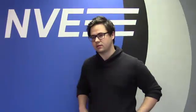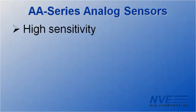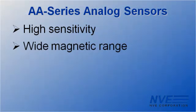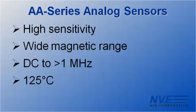So to sum up, NVE analog sensors can be used for sensing current over a circuit board trace. The sensors combine high sensitivity, a wide magnetic range, high speed, and a wide operating temperature range.